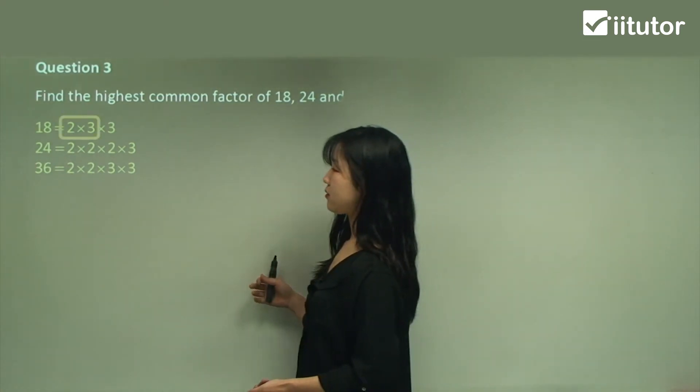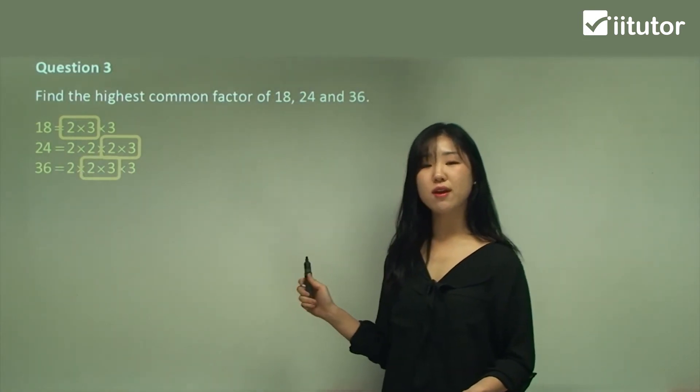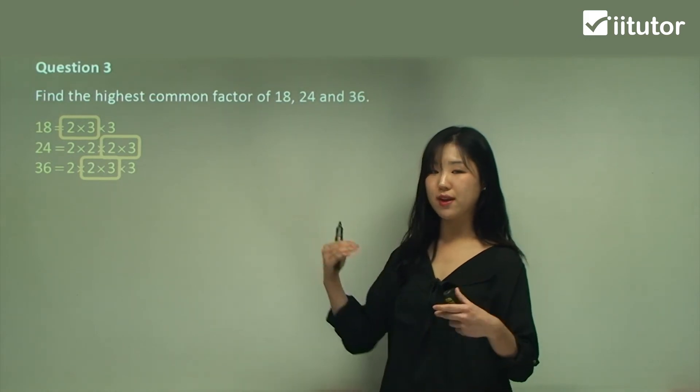2 times 3, 2 times 3, 2 times 3 is common in all 3 factors. It's in all 3 numbers.